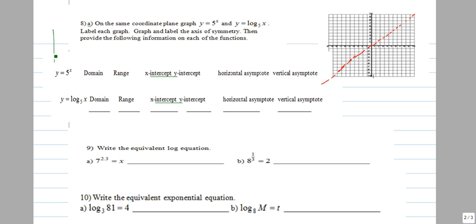So the first one, five to the x. We'll do an xy chart. When x is zero, five to the zero is one—that's our y-intercept. When x is one, five to the one is five. When x is two, five squared is twenty-five. When x is negative one, five to the negative one equals one over five. We get the reciprocal values of the positive ones. Five to the negative two is one over twenty-five.